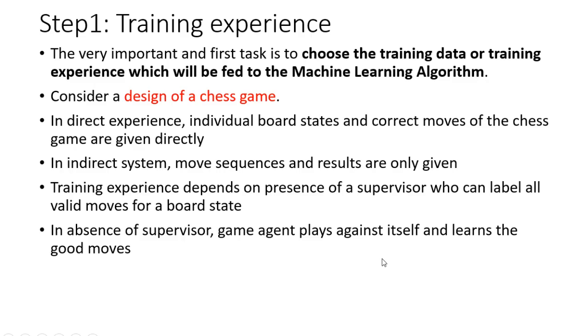Training experience depends upon the presence of a supervisor who can label all the valid moves for a board state — you give labeling for all valid moves. If you don't have a supervisor, the game agent will play against itself and learn the good moves, which would be an example of reinforcement learning. Whether supervised or reinforcement learning, how you choose your training data is very important.